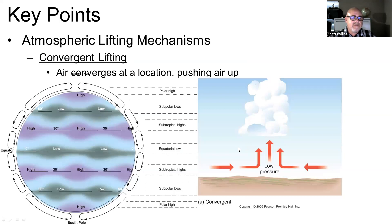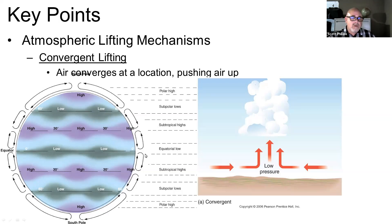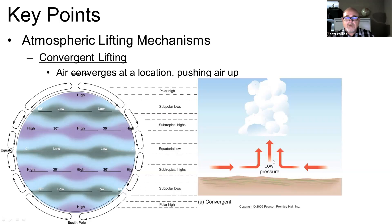The first is convergent lifting. That's what happens at places like the intertropical convergence zone — the low pressure belts of the earth on a global scale. Air is coming together, being pushed together, and then pushed upward in a low pressure zone. In these pressure belts and loops, where we have places like the polar front and the intertropical convergence zone, air is moved upward because of that cycle of air moving.